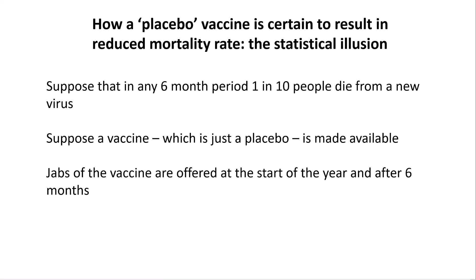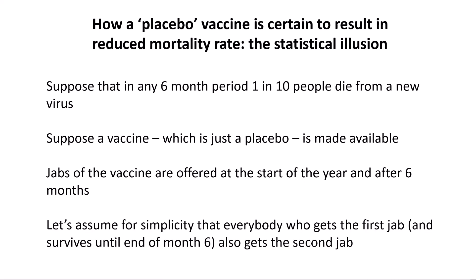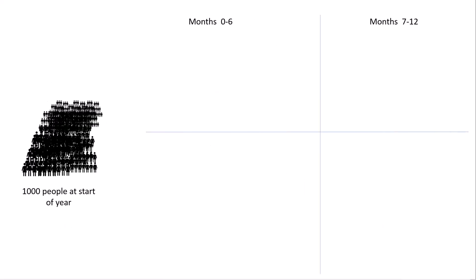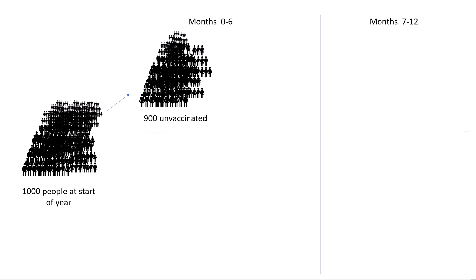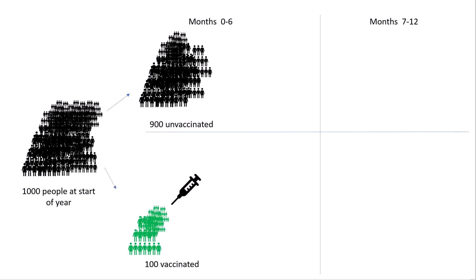Jabs of the vaccine are offered at the start of the year and after six months. And for simplicity, we're going to assume that everybody who gets the first jab and survives until the end of month six also gets the second jab. So let's suppose that at the start of the year, we've got 1,000 people that we're observing. 900 of them don't get the vaccination in the first period — so 900 are unvaccinated in the first six months — and 100 get the vaccination.